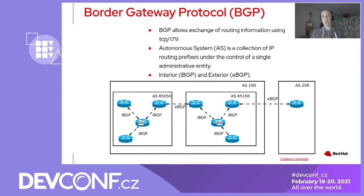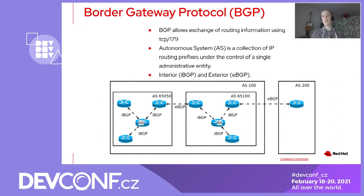BGP is a routing protocol that allows you to exchange reachability and routing information between autonomous systems on the internet. An autonomous system is basically a collection of IP routing prefixes under the control of a single administrative entity. In the public internet, an autonomous system may be a service provider or a large enterprise organisation. You can also use autonomous systems within your own network to segment your IP address space. BGP is a control plane protocol that distributes these routes between autonomous systems using TCP port 179. There are two flavours of BGP: interior BGP, used for exchanging routes within an autonomous system, and exterior BGP, used for distributing routes between autonomous systems.